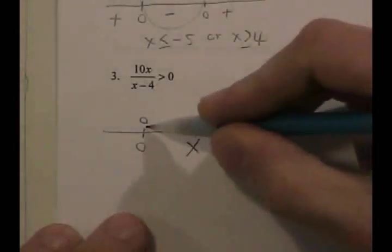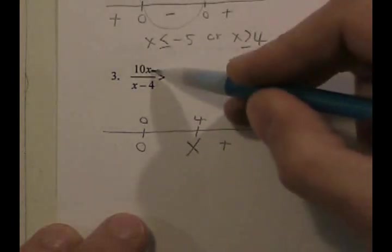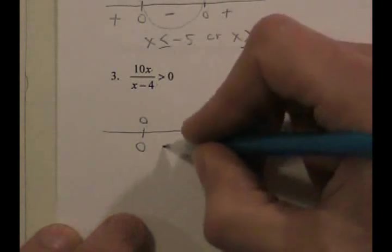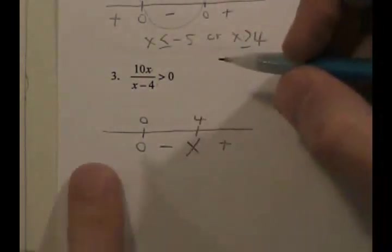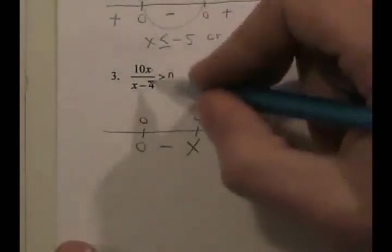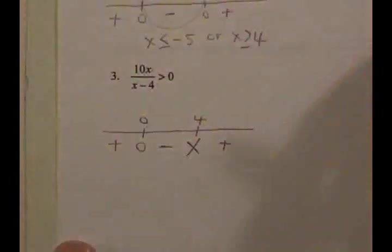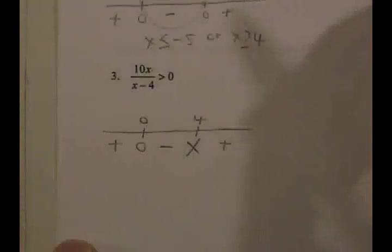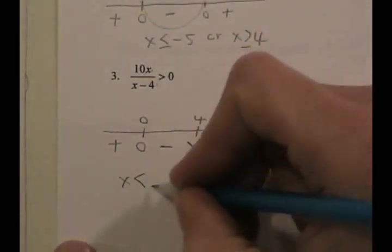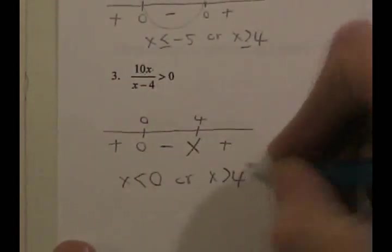If you pick a number between zero and four, the numerator is positive but the denominator will be negative, so positive over negative is negative. If you pick a number less than zero, that makes both numerator and denominator negative, and when you divide them you get positive. So the answer — we want greater than zero — would be x is less than zero or x is greater than four.